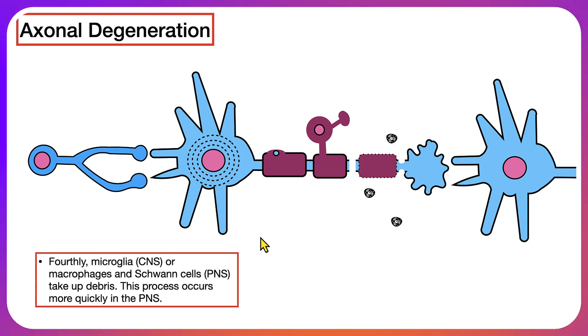The fourth step is when microglia, which are present in the central nervous system, or macrophages and Schwann cells, which are present in the peripheral nervous system, take up the debris. This process tends to occur more quickly in the peripheral nervous system than it does in the central nervous system.